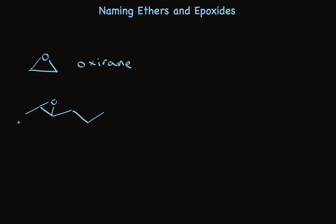So again, we'll find the longest carbon chain. This is a 6-carbon chain, so I'll call it hexane. Put epoxy as the substituent, and number the two carbons where the oxygen appears. So this will be 2,3-epoxyhexane. There you have it. Simply name ethers and epoxides as substituents.